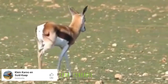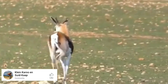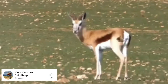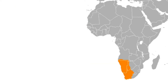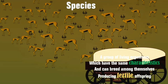In earlier times, millions of migrating Springbok — or Trekbok in Afrikaans — formed herds hundreds of kilometres long that could take several days to pass by with ox wagons. In 2013, Eva Barman of the University of Cambridge and her colleagues undertook a revision of the phylogeny of the tribe Antilopini on the basis of nuclear and mitochondrial data. They showed the Springbok and the Gerenuk form a clade, while the Saiga is a sister taxon. The Springbok is probably the only true gazelle found in the sub-region of South Africa, and this beautiful antelope inhabits the more western reaches of Southern Africa.